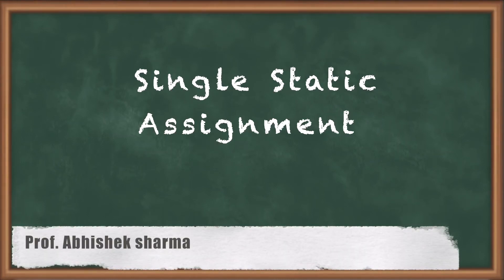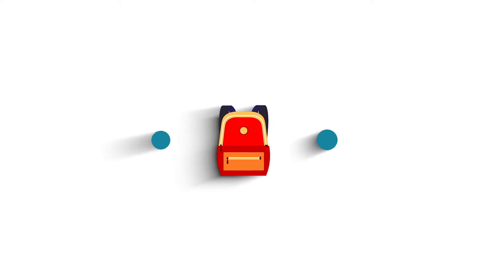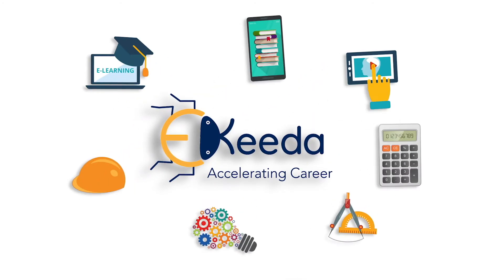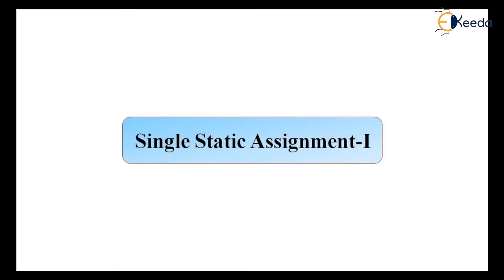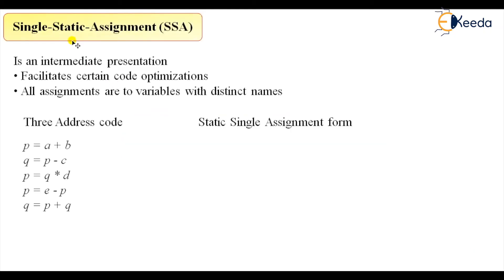Hello friends. In today's class we are going to talk about single static assignment form, which is one type of three address code. Welcome again. This is another three address representation called single static assignment. It is an intermediate representation that facilitates certain code optimizations.